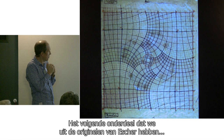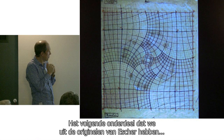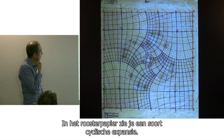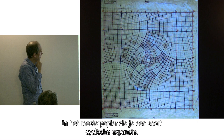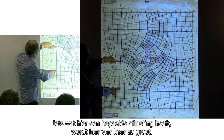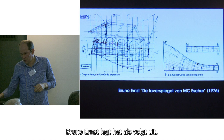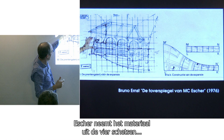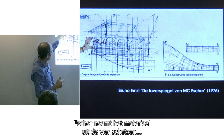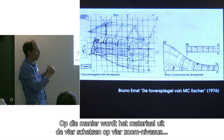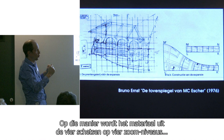Another item from Escher's originals is this amazing curved graph paper. In this graph paper you can see a cyclic expansion: something of unit size here grows to size four over here. You get four factors of four as you go around. As Bruno Ernst explains, Escher would take material from the four sketches and morph it onto this curved grid, so the material from these four zoom levels would combine to form the final print.